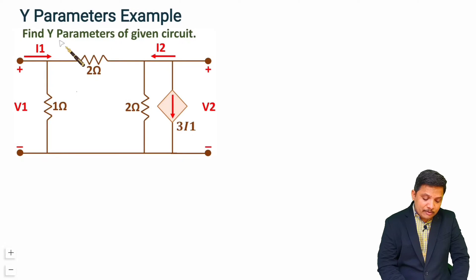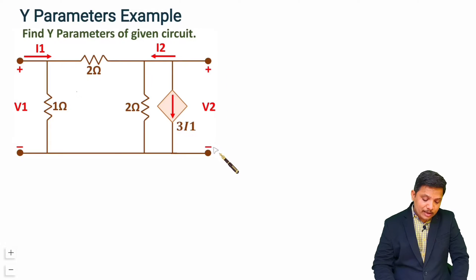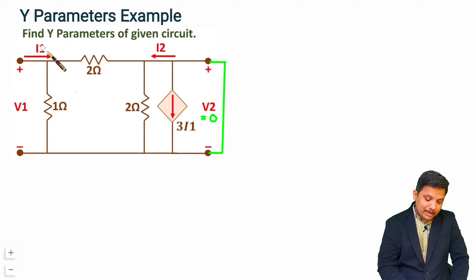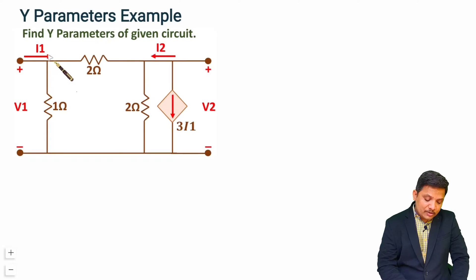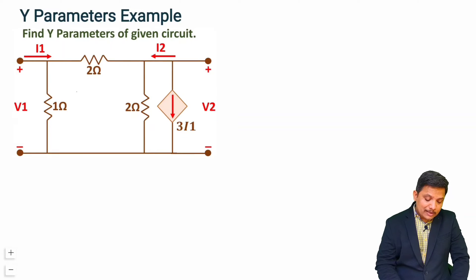As explained in my first video on Y parameters, for measurement of Y parameters we provide a short circuit. First, we will provide short circuit at port 2 and then find I2/V1, that is Y21, and I1/V1, that is Y11. After that, we will provide short circuit at port 1 and identify I2/V2, that is Y22, and I1/V2, that is Y12. So let us do short circuit at port 2 first.